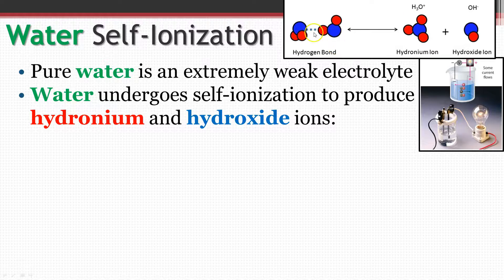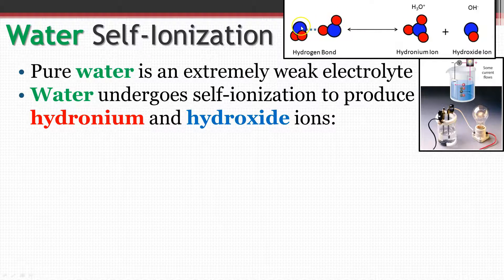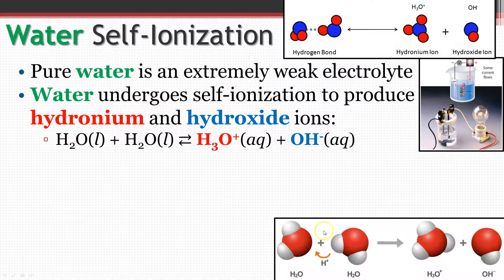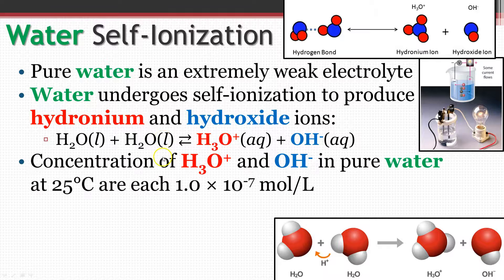Here are two water molecules joined with a weak hydrogen bond. They are going to slightly ionize — one of those protons is going to be transferred from one water molecule to the other. So we're going to have a hydronium cation and a hydroxide anion. Water plus water is going to slightly dissociate in this back-and-forth reversible reaction to form the hydronium cation and the hydroxide anion. The concentration of each in pure water is going to be about 1.0 × 10⁻⁷ moles per liter.